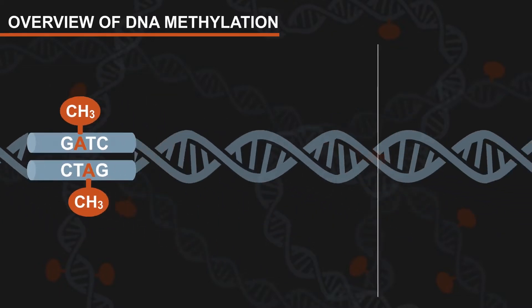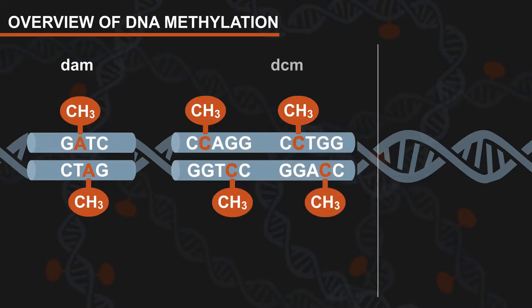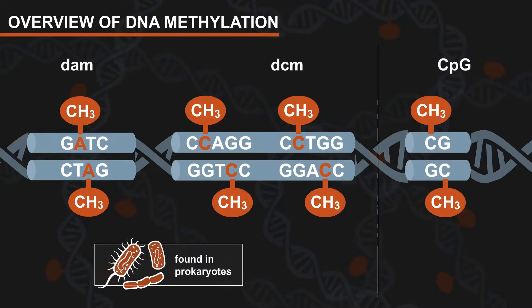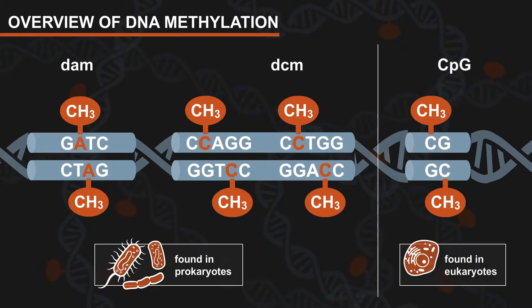The three most common types of methylation that impact restriction digestions are DAM and DCM methylation, which are found in prokaryotes such as E. coli, and CpG methylation, which is found in eukaryotes such as plants and mammals.